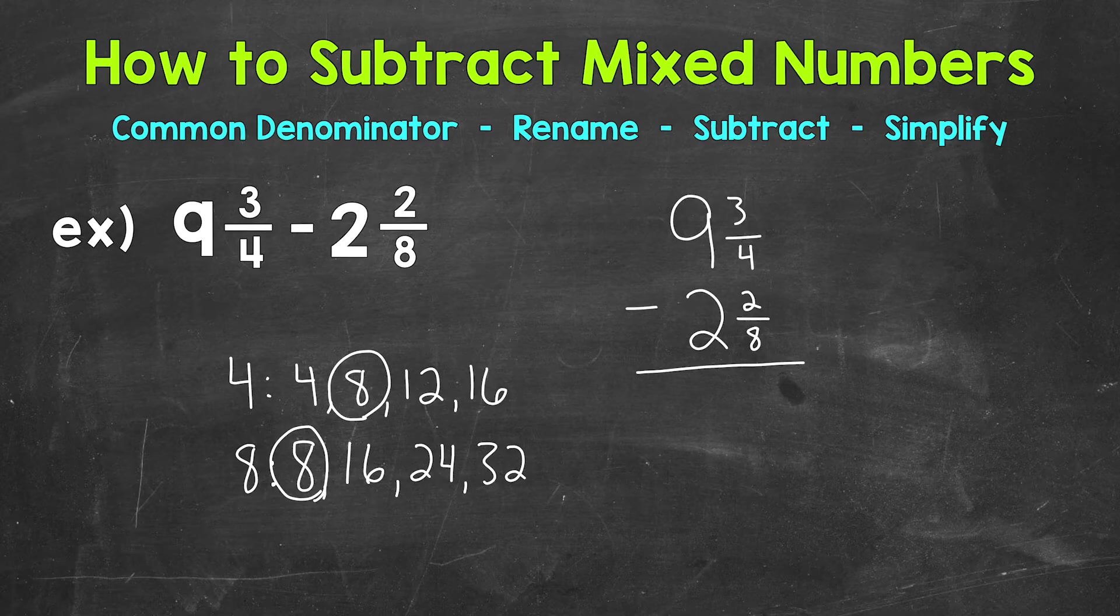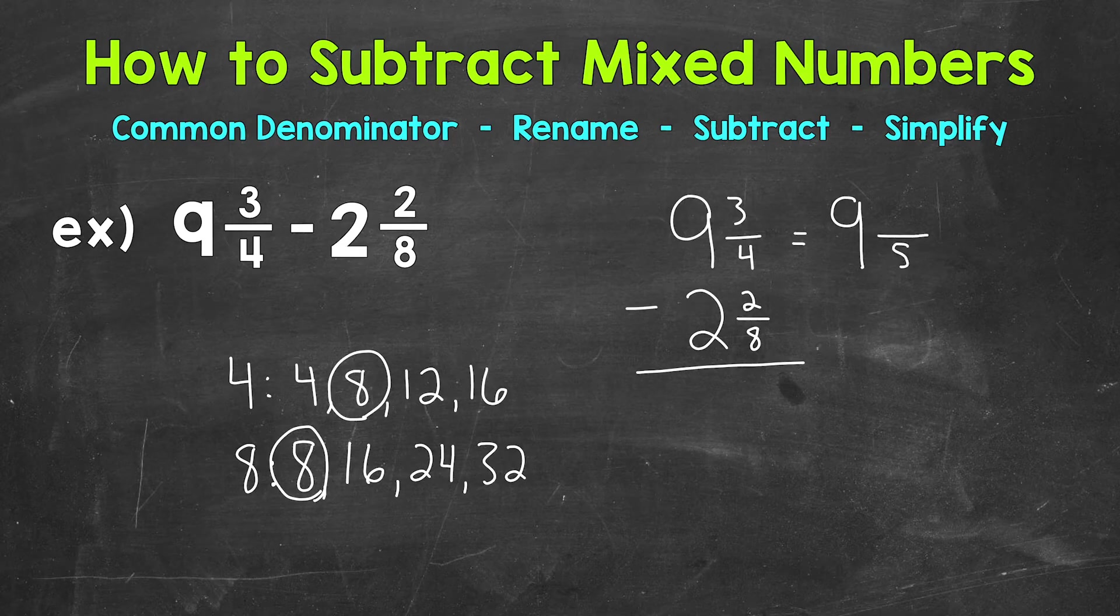Now that we have the common denominator that we're going to use, we can rename the fractional part of these mixed numbers with that common denominator of 8. So let's start with 9 and 3 fourths. So this equals, keep our whole number the same, and then we need that common denominator of 8. So let's use equivalent fractions here.